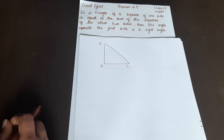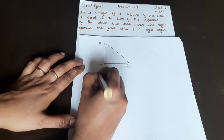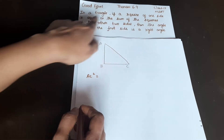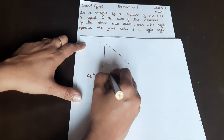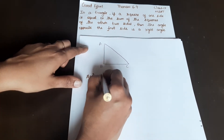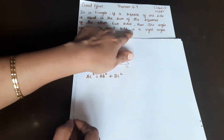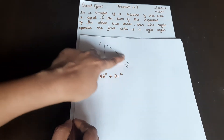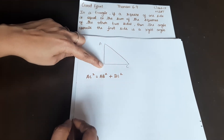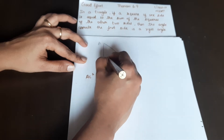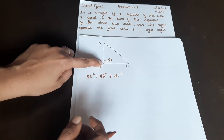In a triangle, if the square of one side is equal to the sum of squares of the other two sides, then the angle opposite the first side is a right angle. So, if AC² is equal to AB² plus BC², then angle B is 90 degrees.